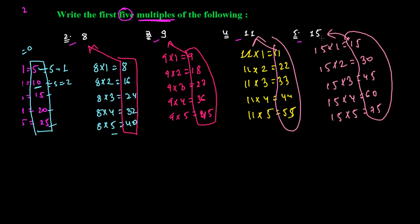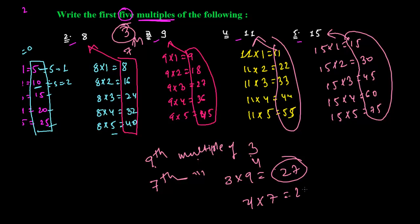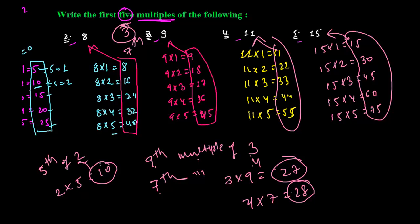Similarly, you may have to find any multiple — the question might ask you to write the first three multiples, or the seventh multiple. For example: the ninth multiple of 3 is simply 3×9=27. The seventh multiple of 4 is 4×7=28. The fifth multiple of 2 is 2×5=10. I hope you understand how to find the multiple of any given number. See you in the next video, goodbye.